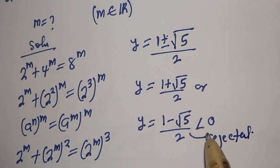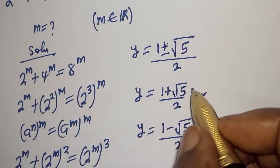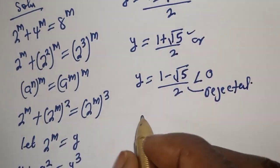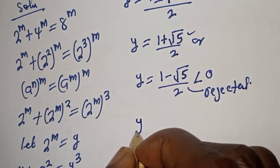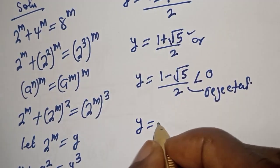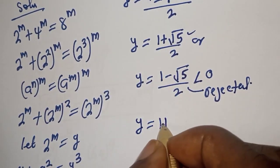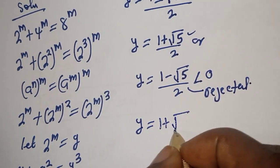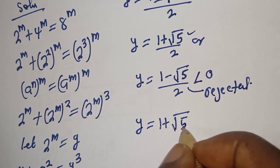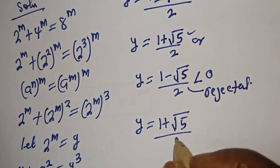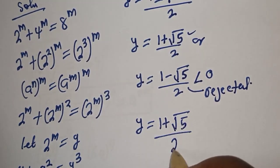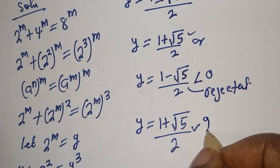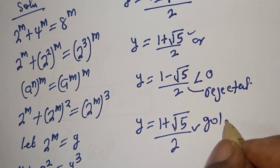The only solution we have is y equals 1 plus square root of 5 over 2, and this is also called the golden ratio.